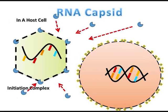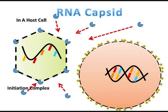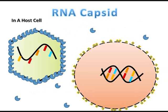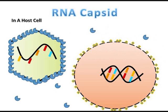The nucleation reaction refers to the interaction of RNA with a few capsid subunits to form an initiation complex. Then, in the second step, dimers made up of individual subunits are added to form a cap on vertices. Dimers are biological entities made up of two monomers. Additional dimers are subsequently added to the growing shell.